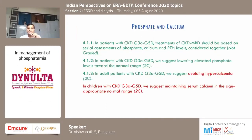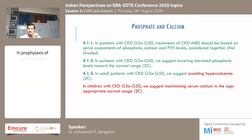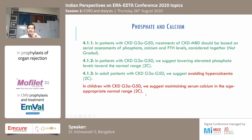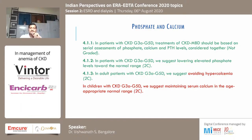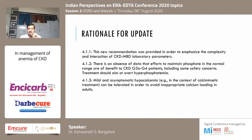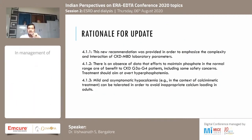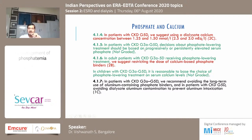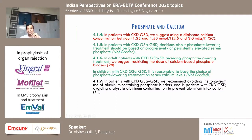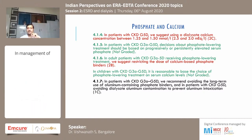Treatment targets should be based on serial measurement of calcium, phosphorus, and PTH. Avoid hypercalcemia and try to avoid too much calcium supplementation. In children, it may be appropriate to maintain serum calcium at the age-appropriate normal range. Calcium should be maintained at a specific level in dialysis to prevent adynamic bone disease. Regarding phosphate-lowering agents, we should try to reduce or restrict the usage of calcium-based phosphate binders, also to prevent adynamic bone disease.